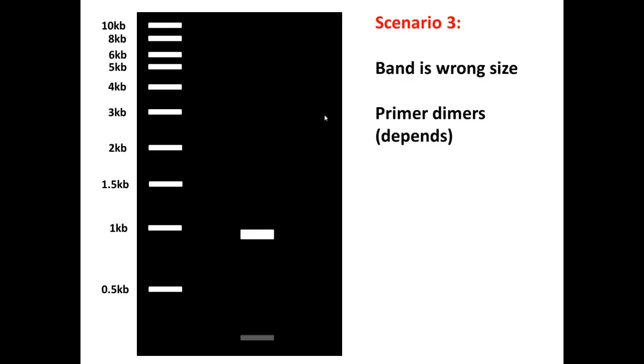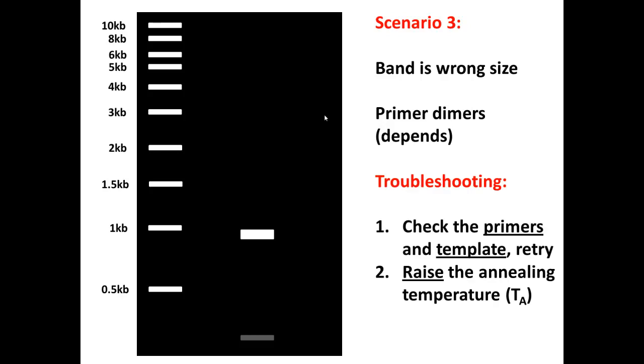Let's look at scenario three. You get a band, but it's the wrong size. So what do we do? First we get the usual primer dimers, but what do we do about this situation? Again, check the primers and templates and retry your experiment. This time you might want to try raising your annealing temperature, because this is definitely non-specific binding and raising it can help limit that for sure.